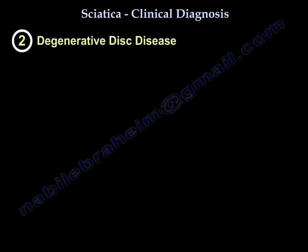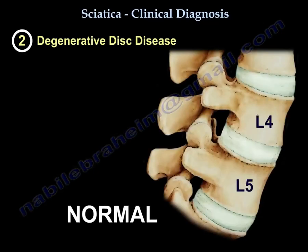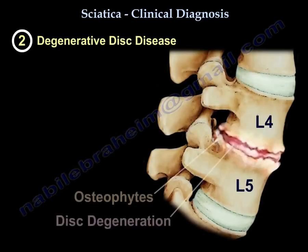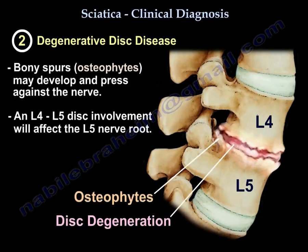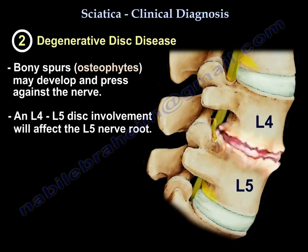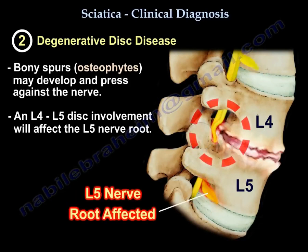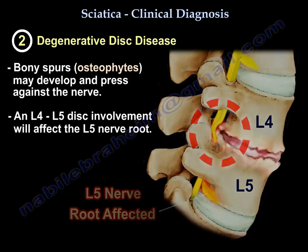Number two is degenerative disc disease. In this condition, bone spurs may develop and press against the nerve. If the disc involves L4-L5, you will have L5 nerve root involvement.